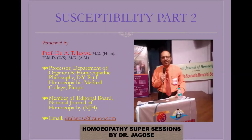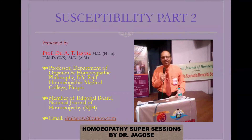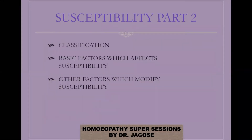Today we see the second part of the lecture on susceptibility. In the first part we had seen the introduction, the aphorism references in the sixth edition of Organon of Medicine, and two important factors for susceptibility to take place. In part 2 I will tell you the classification of susceptibility, the basic factors which affect susceptibility, and also the other factors which modify the state of susceptibility.